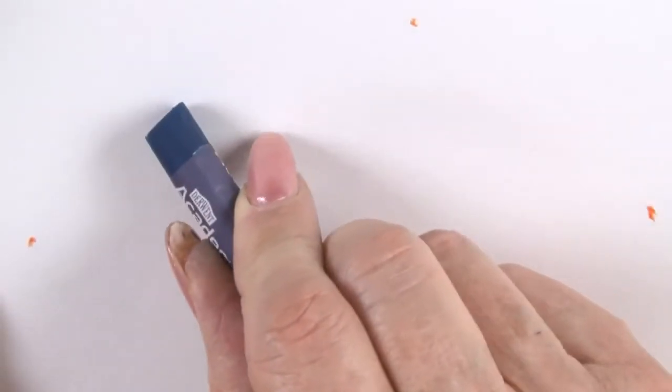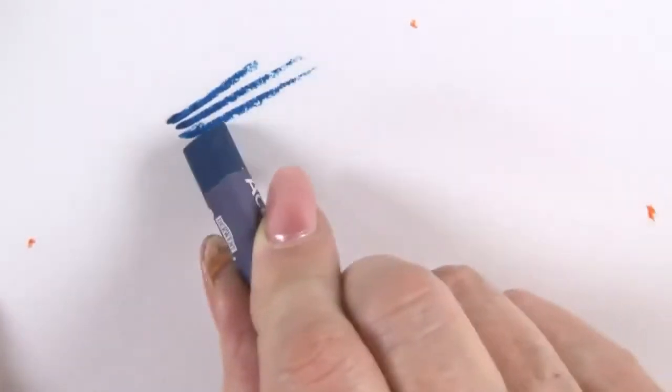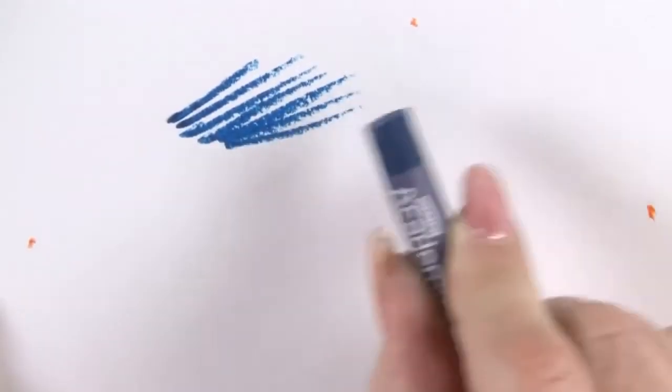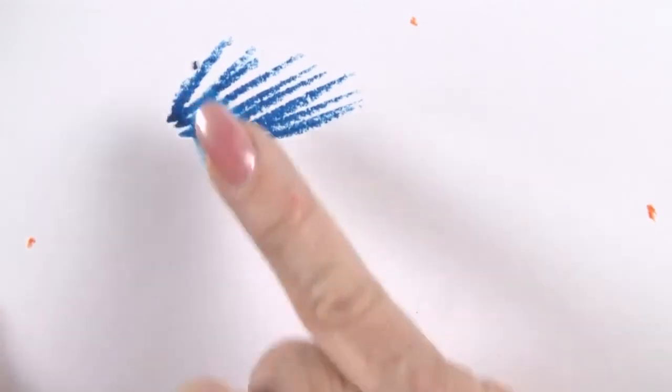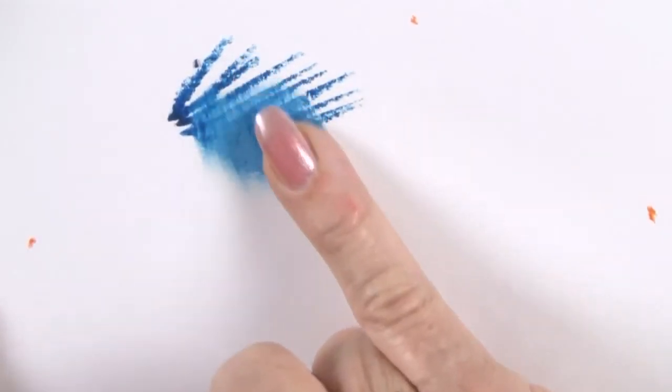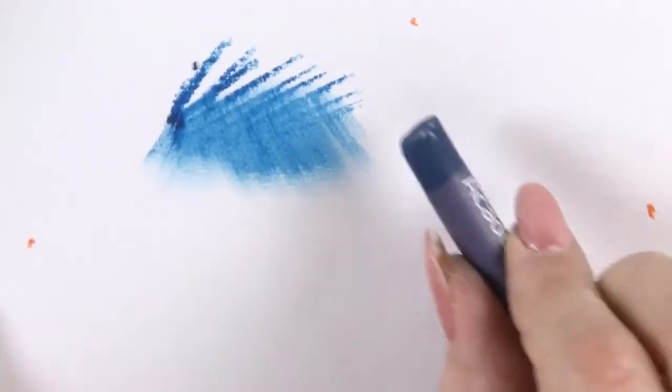This is the Academy Oil Pastel Range and it's lovely to work with. You can draw with it as if you're drawing with a pencil or with dry pastels. If you use your hand, the heat from your hand will actually smudge the color, or you can use solvent to smudge with.